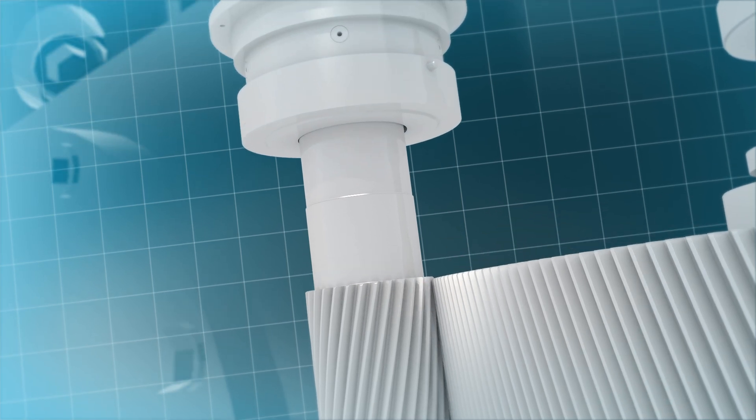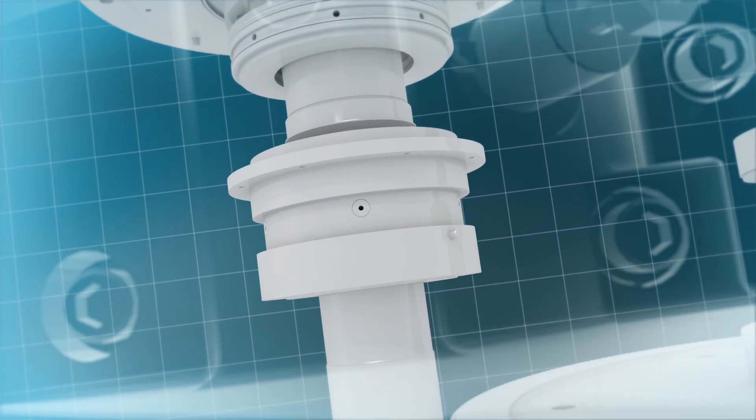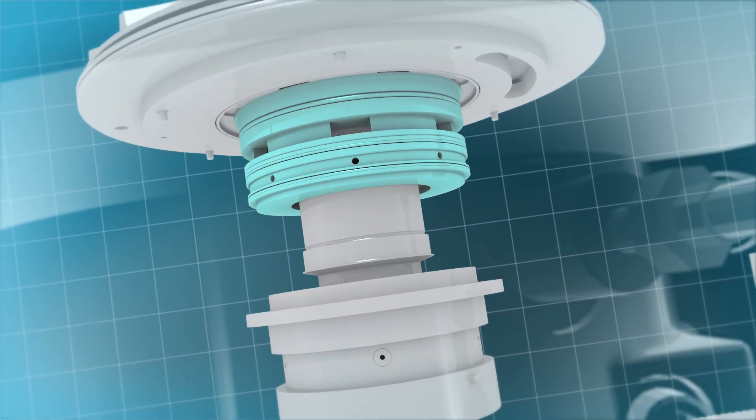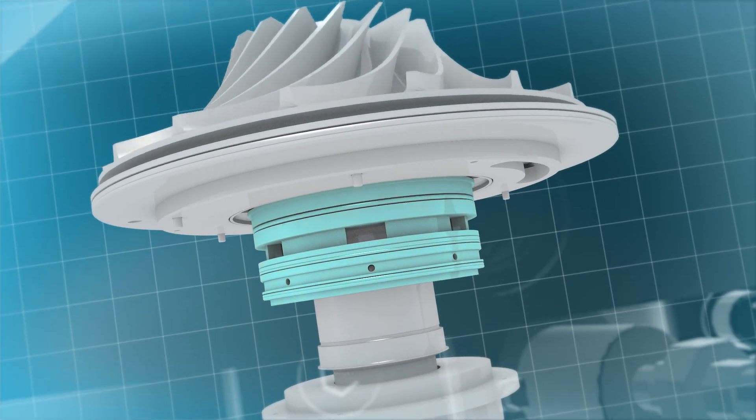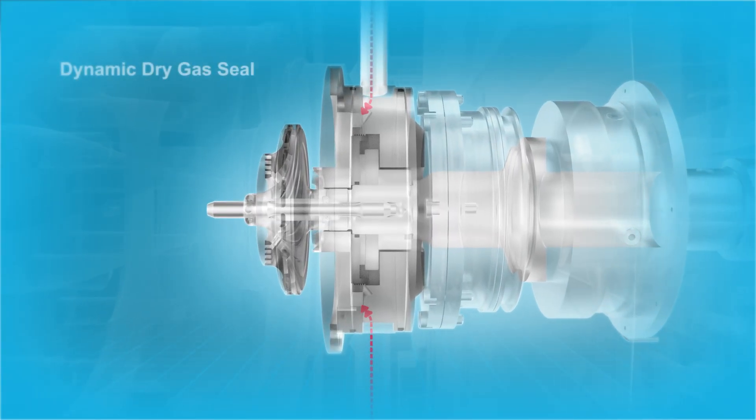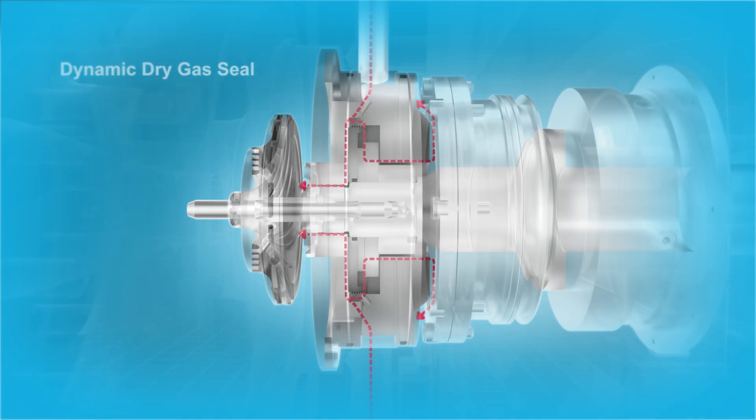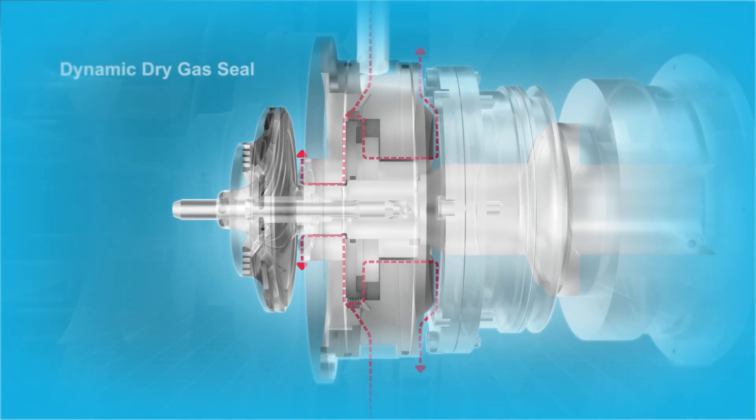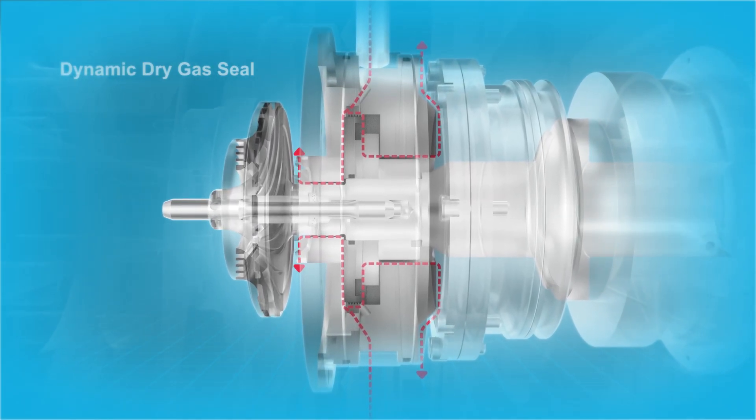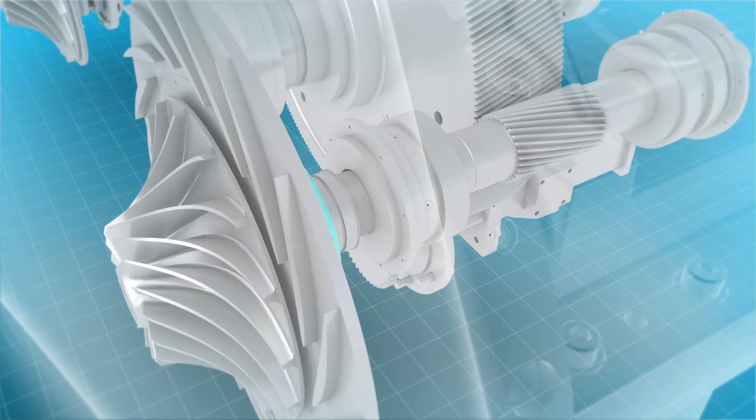For applications where process gas leakage is restricted, or when process gas needs to remain within the system, our integrally geared compressors can be built with dynamic dry gas seals. These seals can be supplied in single, double, or tandem arrangements, depending on the application.